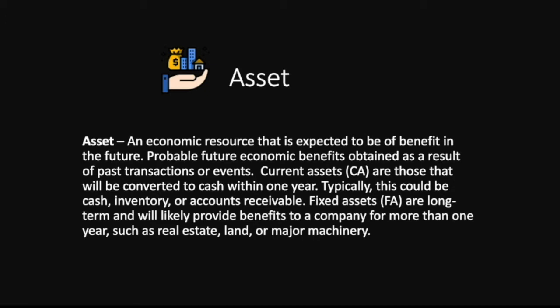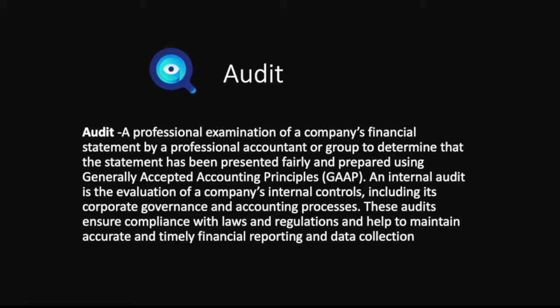An asset — one of the most important terms in accounting — is an economic resource expected to provide benefit in the future: probable future economic benefits obtained as a result of past transactions or events. Current assets are those that will be converted to cash within one year, typically cash in bank, inventory, or accounts receivables. Fixed assets are long-term and will likely benefit a company for more than one year, such as real estate, land, or major machinery.